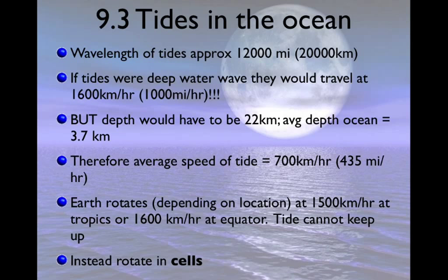Now that we know about some of the complicating factors — like declination and ecliptical orbits that affect tides — what do tides actually look like in the ocean? They have extremely long wavelengths: 12,000 miles or 2,000 kilometers, basically half the earth.